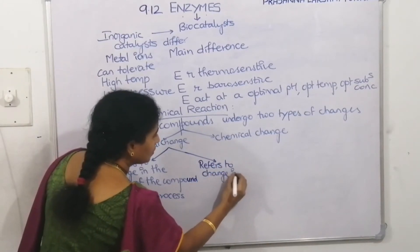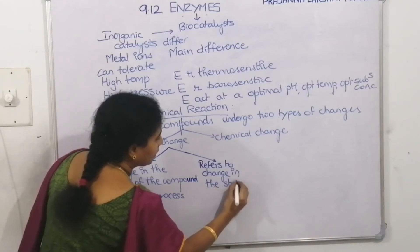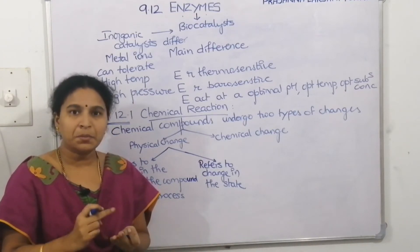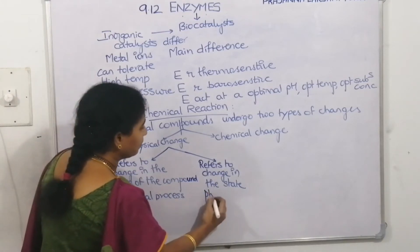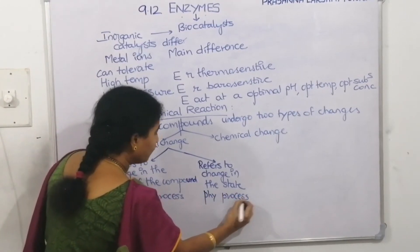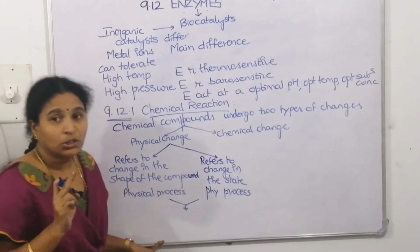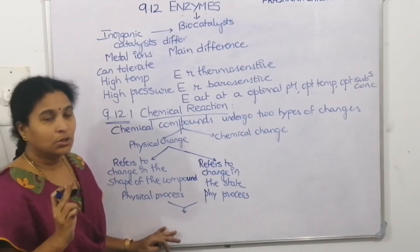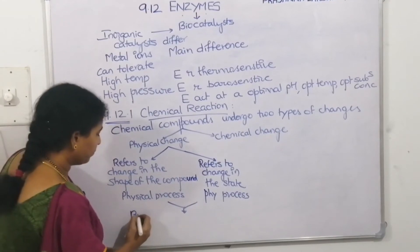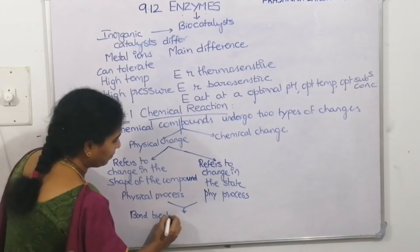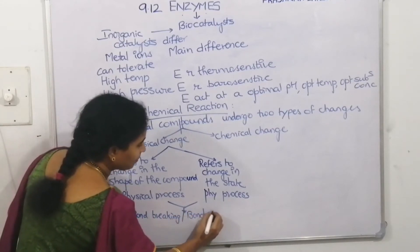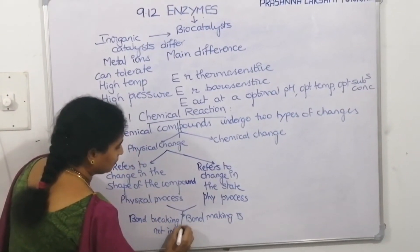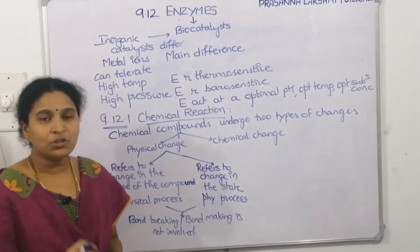A physical change refers to a change in the state of the chemical — for example, solid becoming liquid, or liquid becoming gas. Importantly, a physical change does not involve bond breaking or bond making. If bonds are not involved, it is called a physical change.